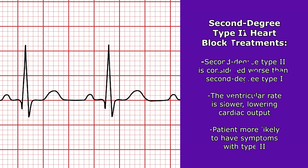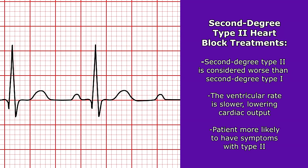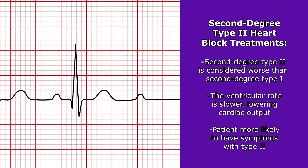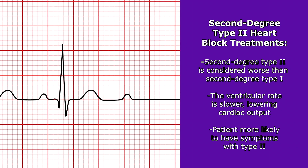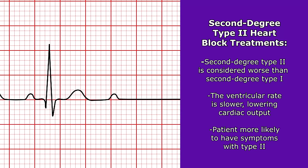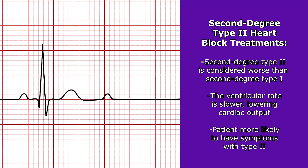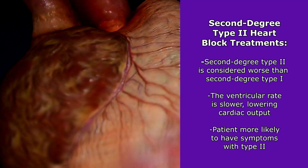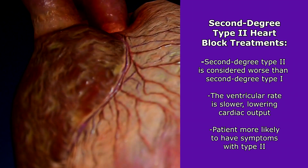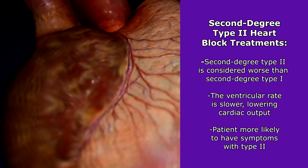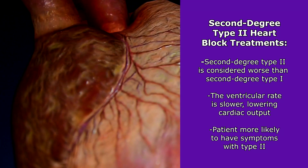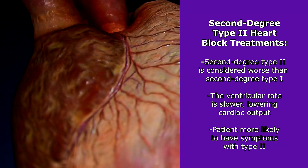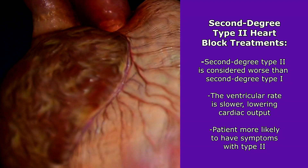What is the treatment for this type of heart block? This is considered worse than second-degree type 1 because the ventricular rate is on the slower side. When the ventricular rate slows down, it affects how much blood the heart can pump to the body, thereby lowering cardiac output. Because of this, the patient is more likely to have symptoms with this rhythm.